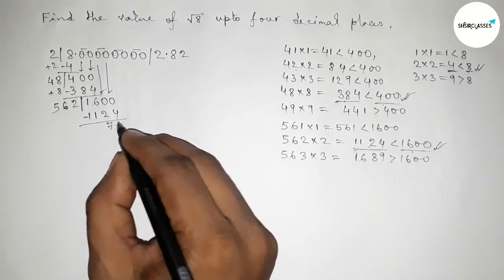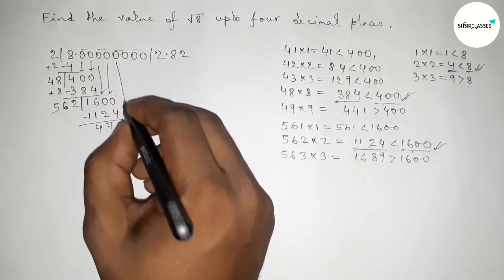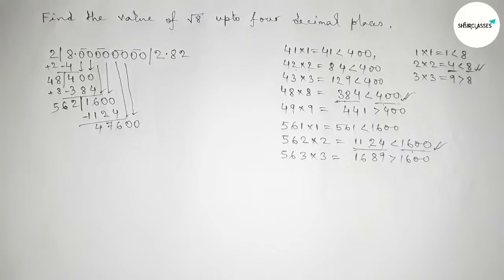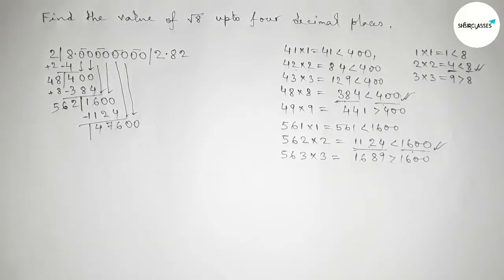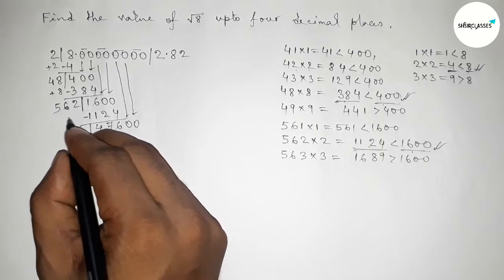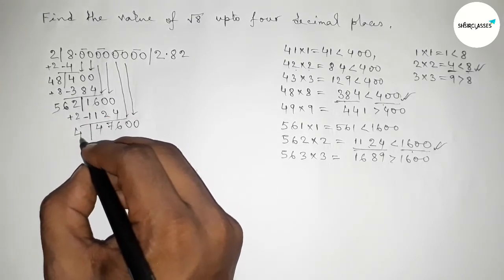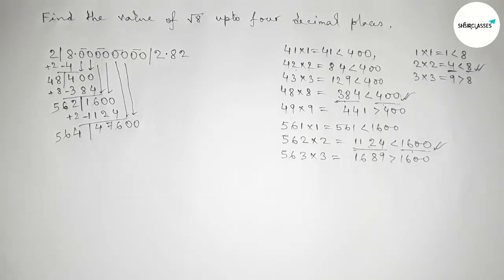Subtracting: 1600 minus 1124 gives 476. Bring down the next pair of zeros to get 47600. Draw the division line. The last digit is 2, so adding 2: 2 plus 2 equals 4, making the partial divisor 5652 (or similar).